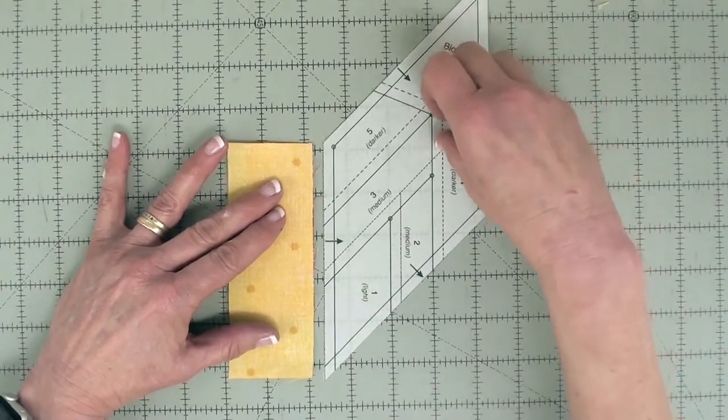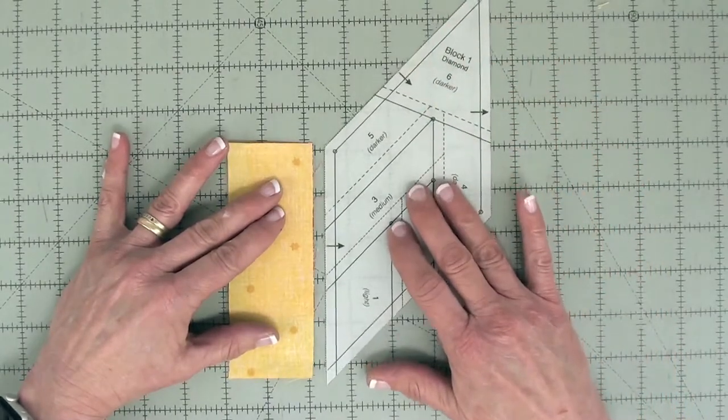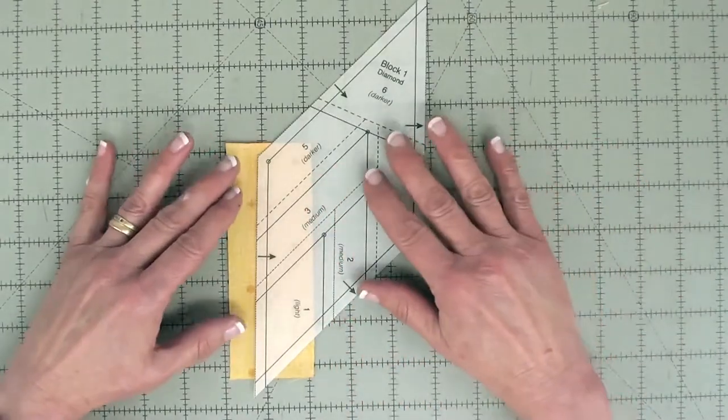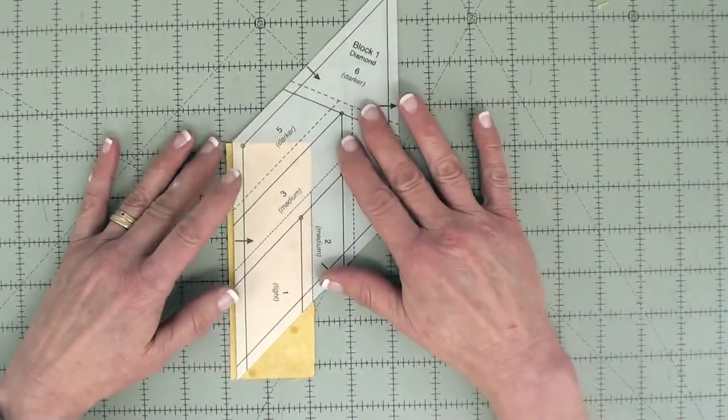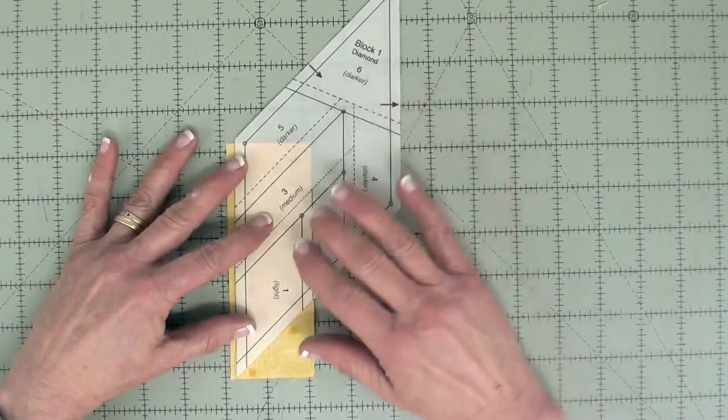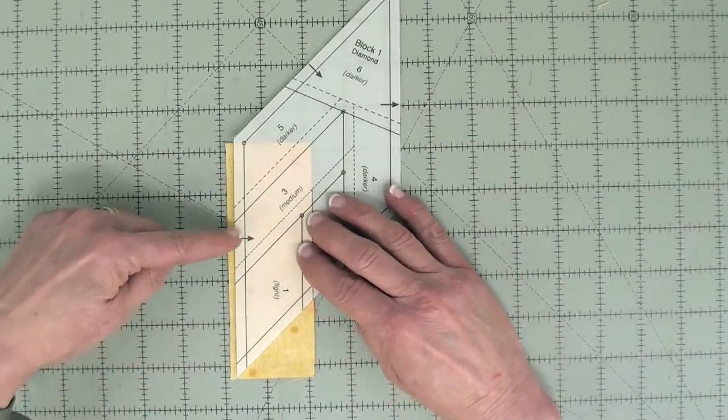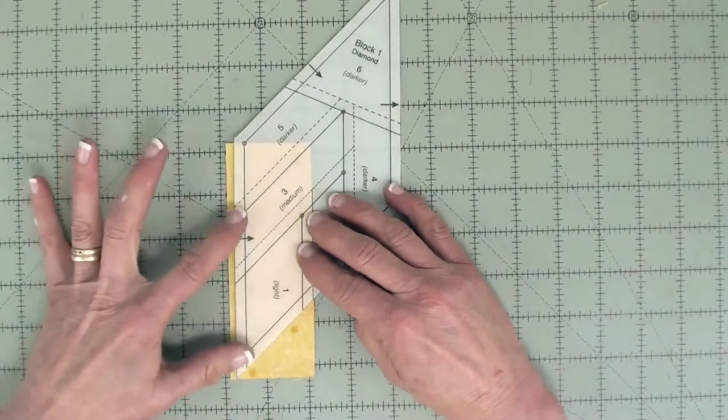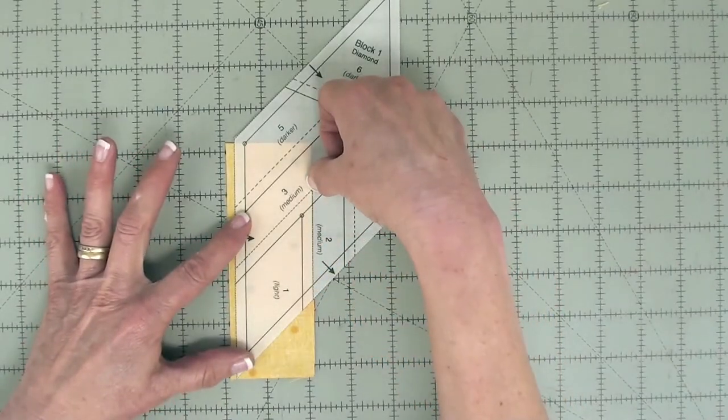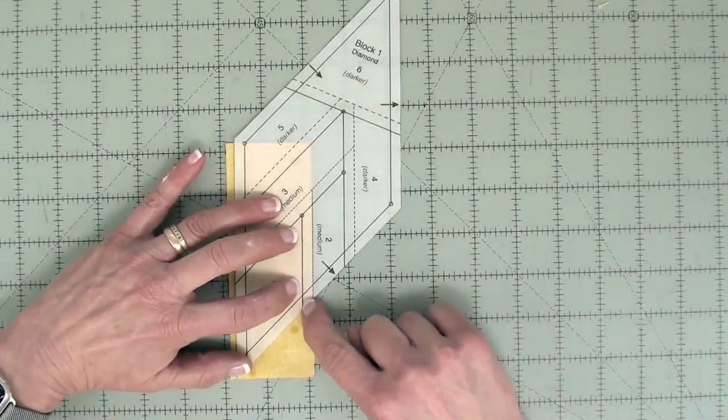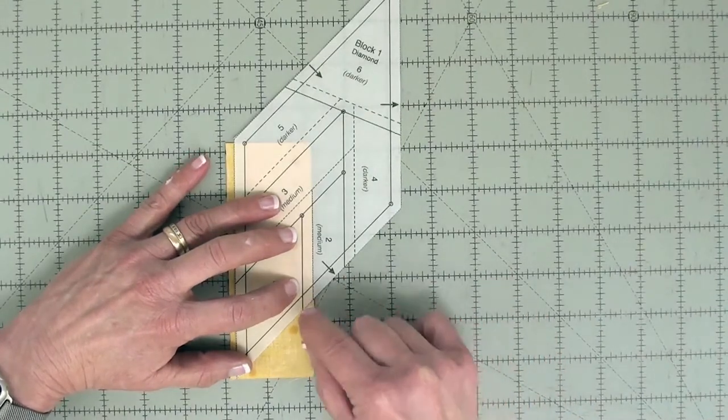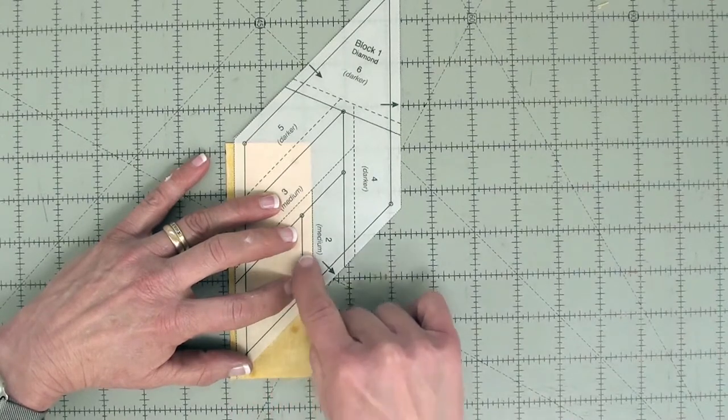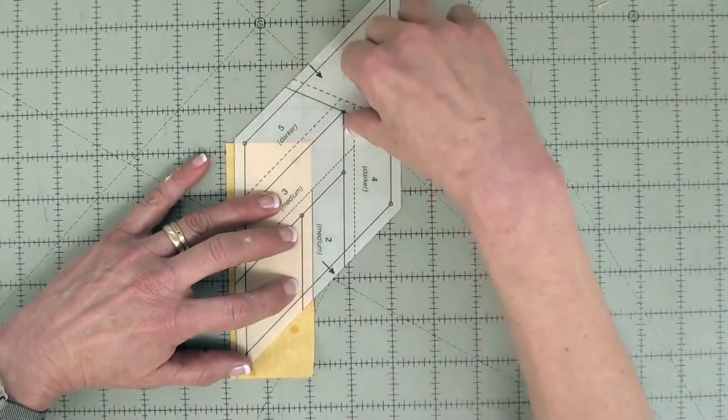So when you position the paper with the lines up facing you, the right side of the paper facing you, you want to make sure that you line it up so that the number one fabric is all the way underneath the number one shape and its seam allowances. And the number two fabric is underneath all the way down to there, to the end of that point, and it will extend all the way over to here.